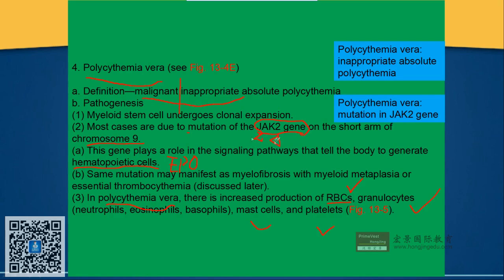The JAK2 gene mutation is also seen in other conditions — myelofibrosis and essential thrombocytosis. These are the chronic myeloproliferative disorders we have discussed.